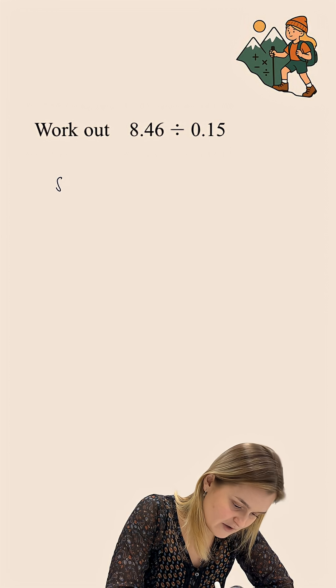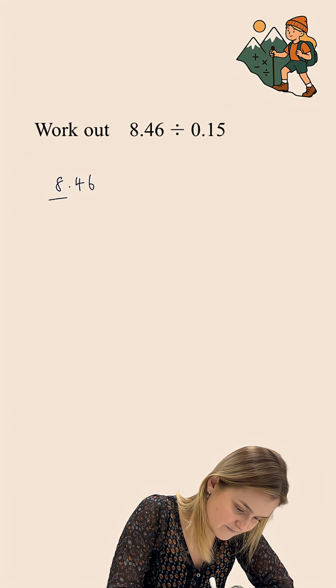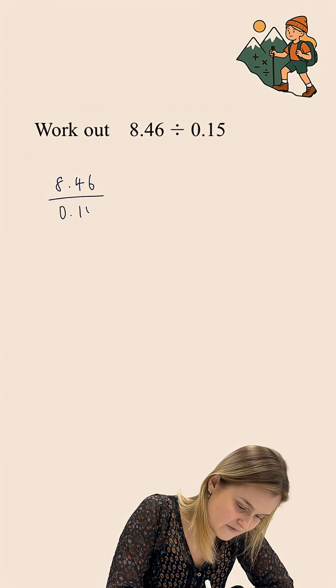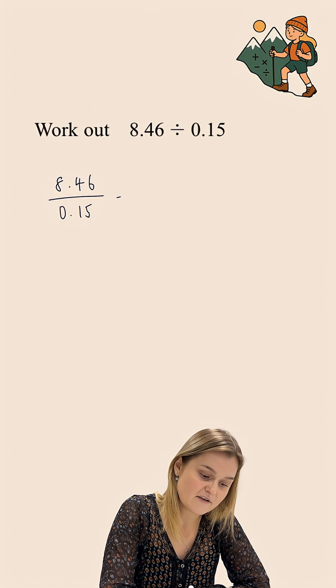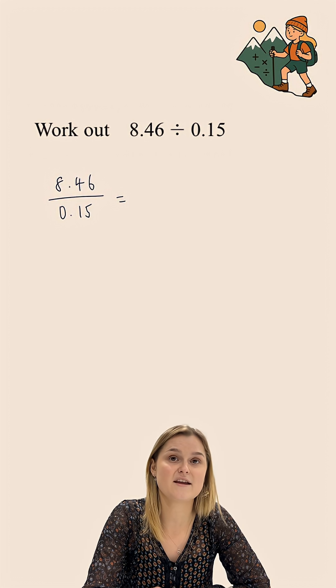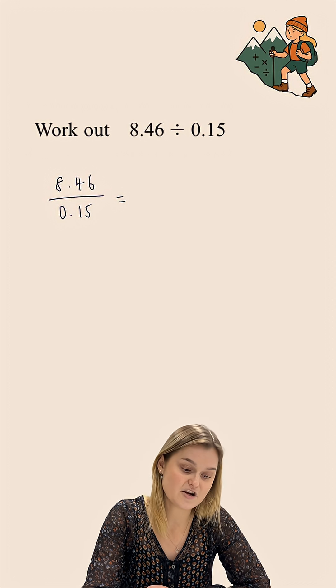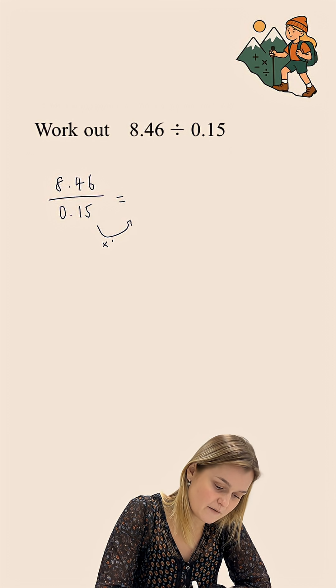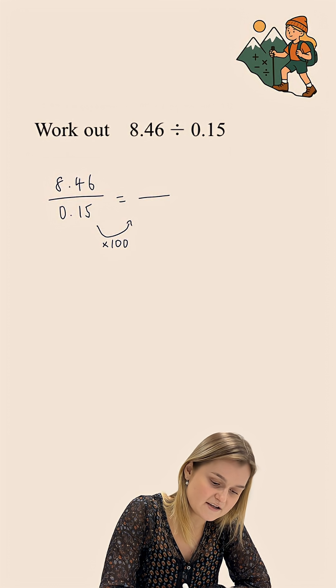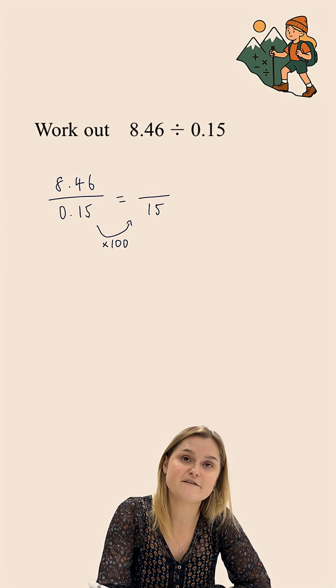I'm going to start off by writing this as a fraction. So I have 8.46 on the numerator and 0.15 on the denominator. Now dividing by a decimal is much trickier than dividing by an integer, and so the first thing that I'm going to do is multiply the denominator of this fraction by 100 to turn it into an integer. That will turn it into 15.